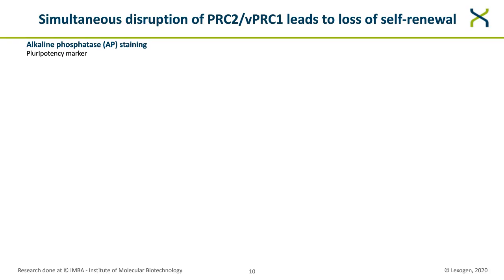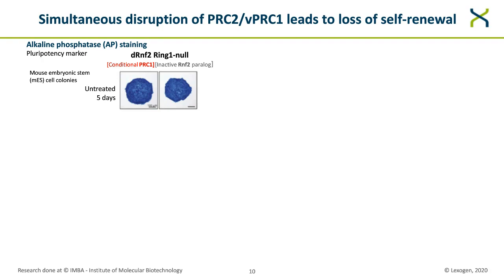Having established these cell lines, we assessed the cellular phenotype of auxin-mediated double depletions by examining ESC colony morphology and pluripotency by alkaline phosphatase staining. Pluripotency is the ability of a cell to develop into the three primary germ layers, for which PRC1 function is essential in mouse ESCs. Light microscopy pictures show round dome-like ESC colonies without auxin; cells grown in the presence of auxin appear fragmented with less staining, consistent with spontaneous differentiation and exit from pluripotency.